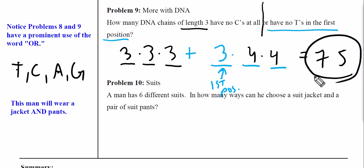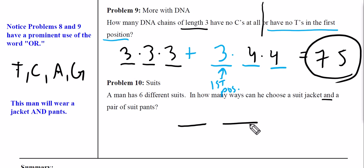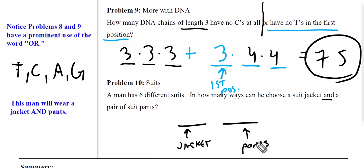Problem: a man has six different suits. How many ways can he choose a suit jacket and a pair of suit pants? Notice it says 'and,' so don't expect a plus — this is multiplication. One slot for the jacket, one slot for the pants. There are six suits, each with a jacket and pants, so 6 options for the jacket and 6 options for the pants: 6 × 6 = 36.